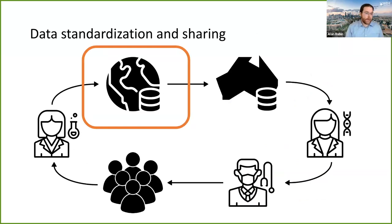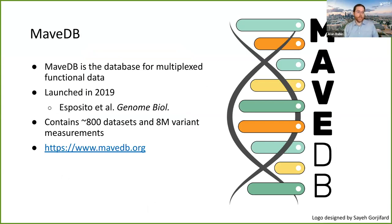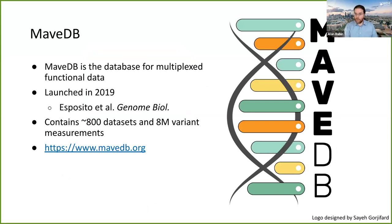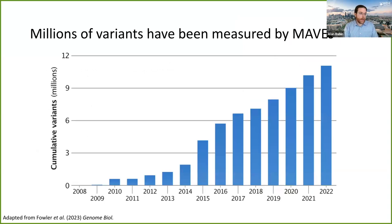One of the big challenges as we try to organize all of this data is data standardization and sharing. This brings us to MAVE-DB—the database for multiplex functional data. We launched it almost five years ago, and it contains over 800 datasets and more than 8 million variant effect measurements. It's a community database where anyone can deposit their data, free for everybody to access, with most data licensed CC0 public domain. We really want to make it open and possible for everybody to share their datasets and access it for any research or clinical applications.